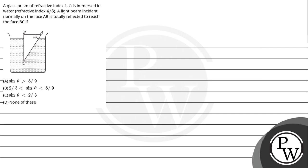Now let's read the question: A glass prism of refractive index 1.5 is immersed in water of refractive index 4/3. A light beam incident normally on face AB is totally reflected to reach face BC.